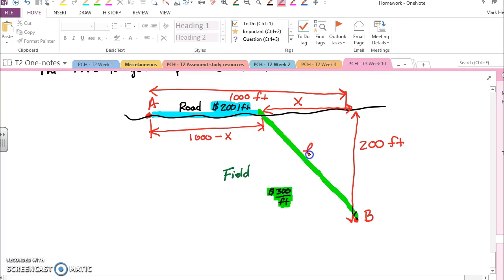And this length here is unknown and can be calculated with the Pythagorean Theorem where x squared plus 200 squared equals L squared, or L equals the square root of x squared plus 200 squared.